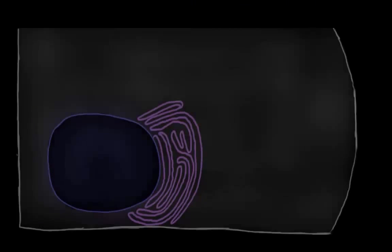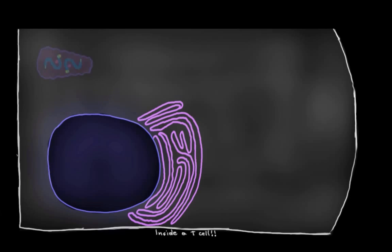So once this capsid with viral RNA and some viral enzymes enters our cell, it gets degraded by some of our cellular enzymes. And this is essentially another bad move on our cell's part, because it releases the viral enzymes and the viral RNA, which can now get to work on taking over our T cell. We kind of just got Trojan-Horsed in a way.